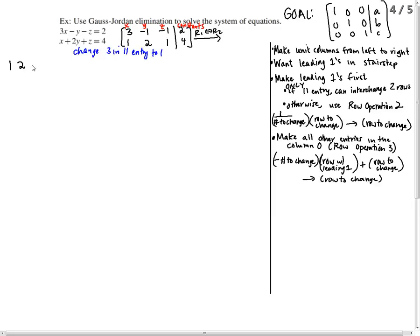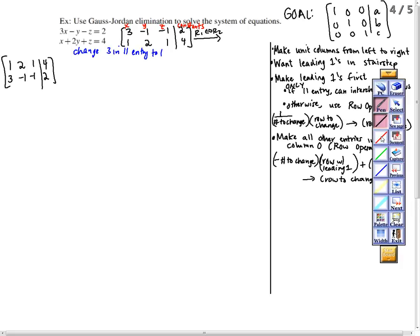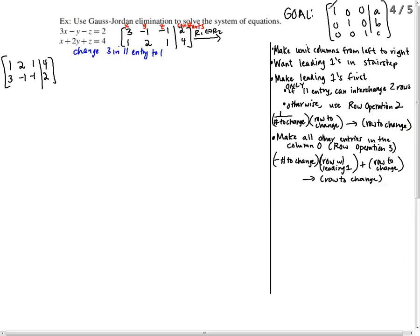So my new row 1 is 1, 2, 1, 4. My new row 2 is 3, negative 1, negative 1, and 2. So that was really easy. I have my 1 right here.